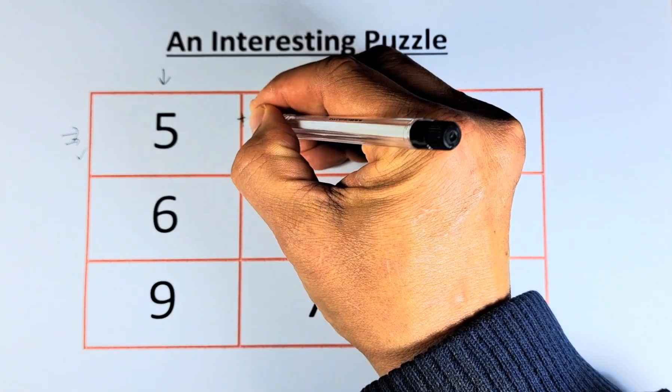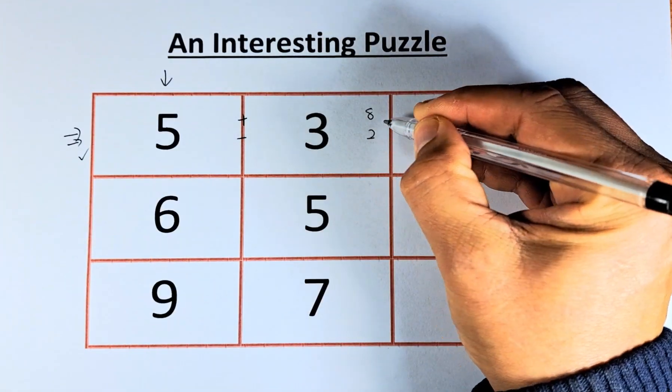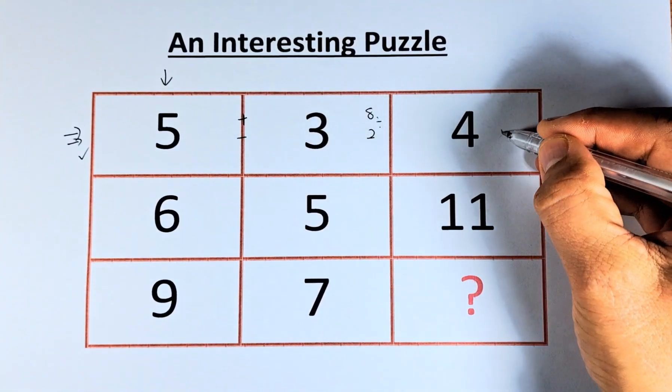we are going to add the first number. 5 plus 3 is going to be 8. 5 minus 3 is going to be 2. And then 8 divided by 2 will give us 4.